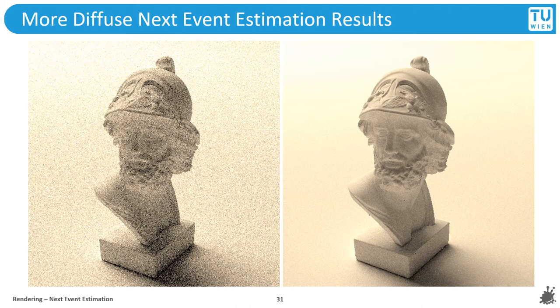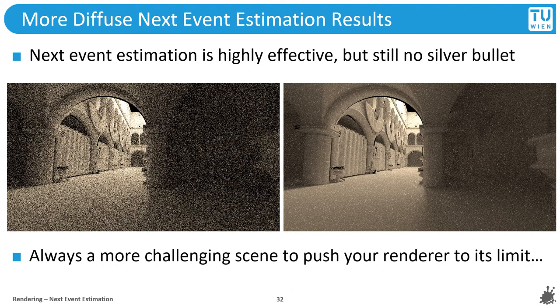Here is another result of using next event estimation instead of BRDF sampling. Especially for diffuse materials, next event estimation has a huge impact on quality, because diffuse BRDF sampling is actually not extremely different from uniform hemisphere sampling. But of course, next event estimation is not a silver bullet. No matter how many improvements you add to your path tracer, there will always be a more challenging scene that pushes it to its limits. With very large scenes and a lot of complex indirect lighting, even a path tracer with a good BVH and next event estimation may struggle to resolve images without noise in an adequate amount of time.